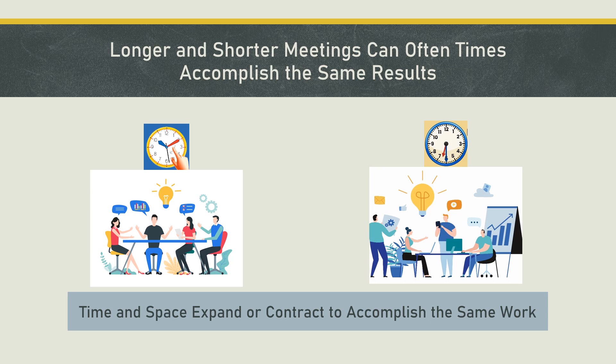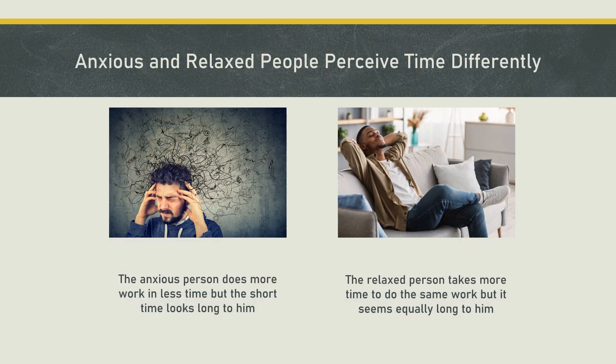We can illustrate the same issue with another example. Suppose there are two people, one anxious and one relaxed. The anxious person does more work in a short time, but that short time looks long to him — and he dies sooner. The relaxed person does less work in a long time, but that long time looks the same to him as the anxious person's time, and he lives longer. Thus, conscious time decides a person's lifetime from their own perspective, while clock time decides the objective time as felt by others.